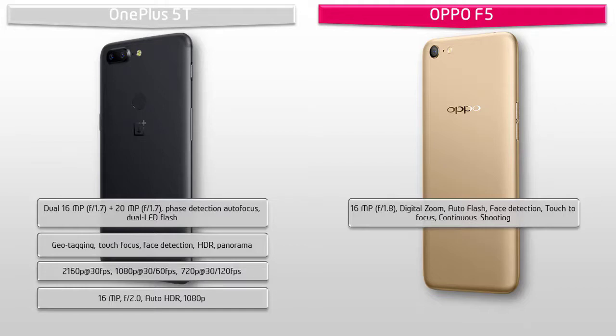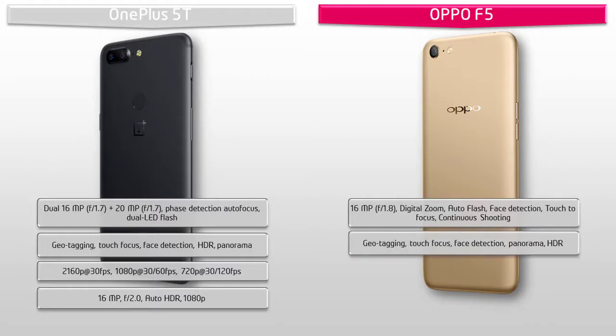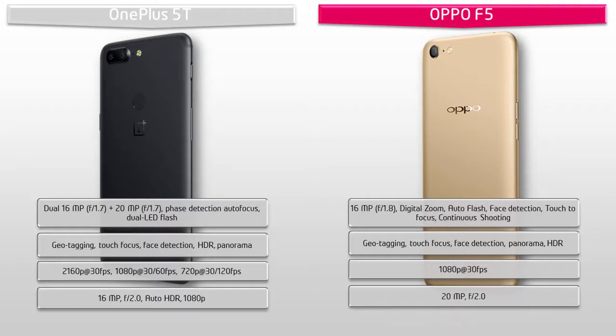The Oppo F5 primary camera also features continuous shooting, geotagging, touch focus, phase detection, panorama, and HDR, and shoots video at 1080p at 30 fps. The Oppo F5 also has a 20 MP secondary camera with f/2.0 aperture for selfies, offering real-time selfie enhancement as Oppo claims.